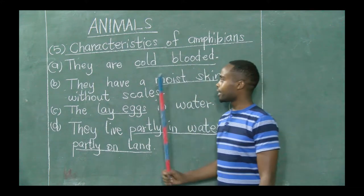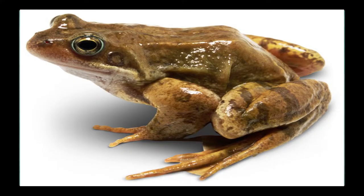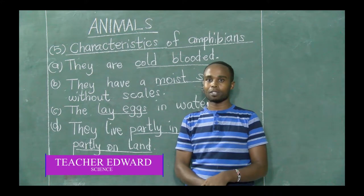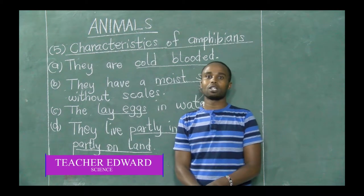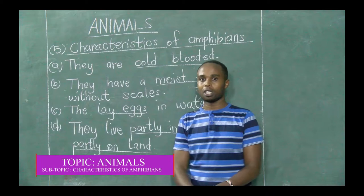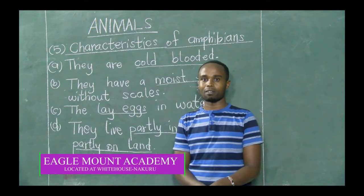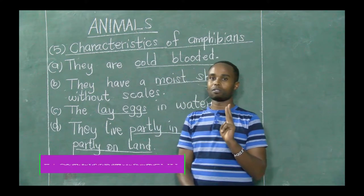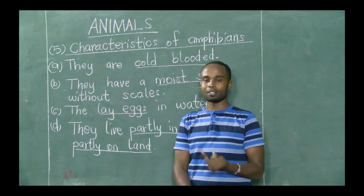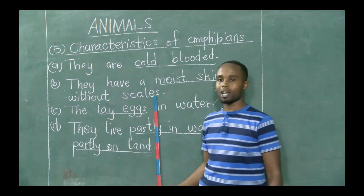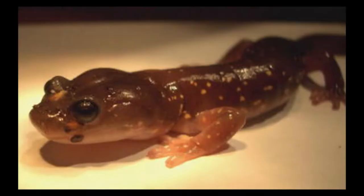That is characteristic number one. Characteristic number two: they have moist skin without scales. For amphibians, they don't have scales. Some vertebrates do have scales — reptiles, fish, and the feet of birds are covered with scales. But for amphibians, they don't have scales. Their body is moist, so they have moist skin but no scales.